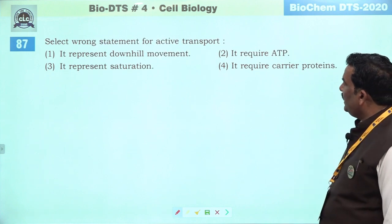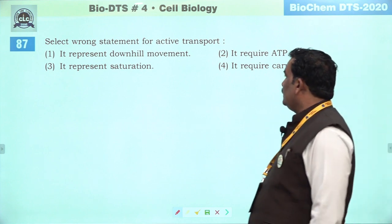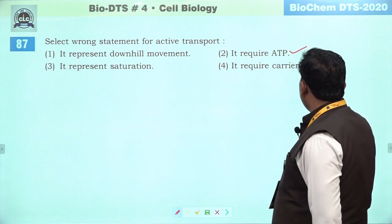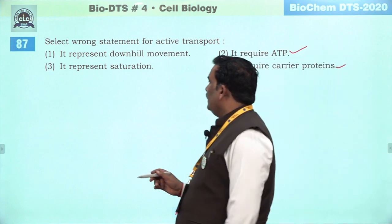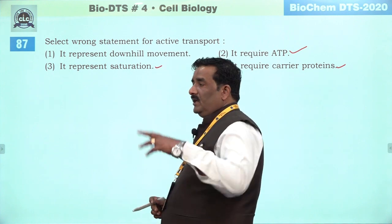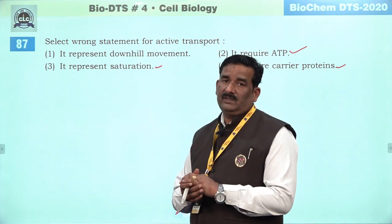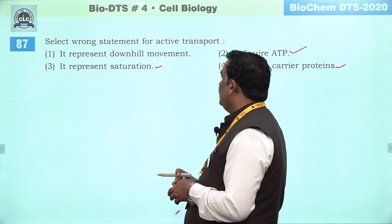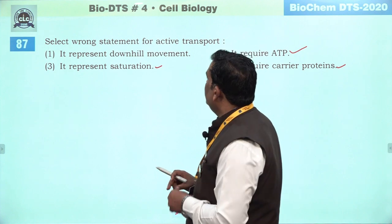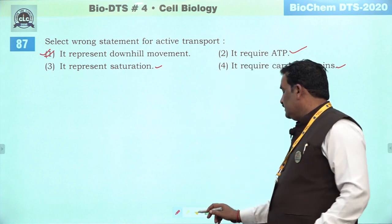Next question: select wrong statement for active transport. Required ATP — bilkul sahi hai. Require carrier protein — yes. Saturation show karti hai — active transport kyunki ismein carrier protein hai, ek limit tak hi substance ko pass out kara sakti hai. Lekin yeh uphill movement hota hai — from low concentration to high concentration hota hai — not downhill. Downhill movement occurs in diffusion process. Iska matlab active ke liye galat ho raha hai. First is the right answer.